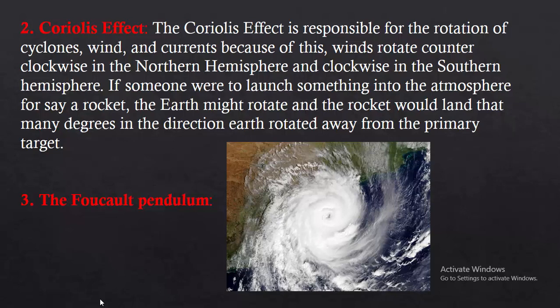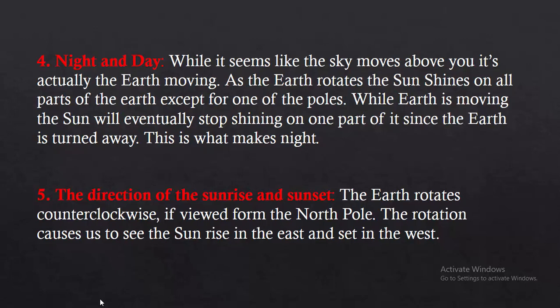The effect of the Foucault Pendulum proved the rotation of the Earth. We also have a rotation meter which counts the rotations. Now the fourth and most important effect is day and night, which is caused by rotation. Number 5 is the direction of sunrise and sunset — rotation causes us to see the sunrise in the east and the sunset in the west.